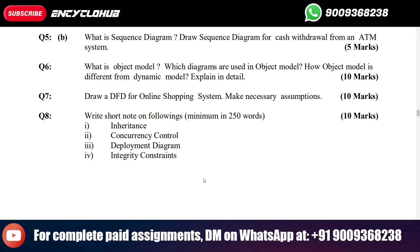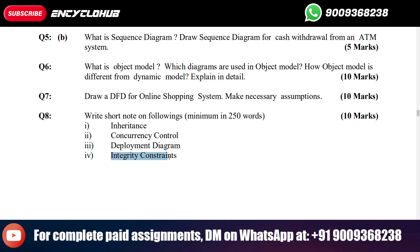Hey guys, welcome back. Today we will see MCS-032 assignment, MCA course — write short note on the following, minimum 250 words: first is Inheritance, second is Concurrency Control, third is Deployment Diagram, and fourth is Integrity Constraints.